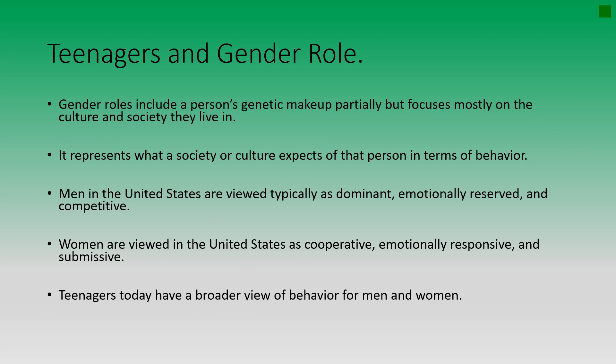Teenagers and gender roles: gender roles include a person's genetic makeup partially, but focus mostly on the culture and society they live in. It represents what a society or culture expects of that person in terms of behavior. In the United States, men are typically viewed as dominant, emotionally reserved, and competitive. Women are typically viewed as cooperative, emotionally responsive, and submissive. These may not reflect everyone's personal opinion, but they are the typical societal views. Teenagers today have a broader view of behavior for men and women.